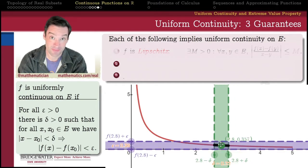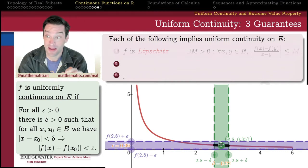So here's the reciprocal function. This was our paradigmatic example of a function which is continuous on a domain, namely the open interval from zero to one, but which was not uniformly continuous on that domain.